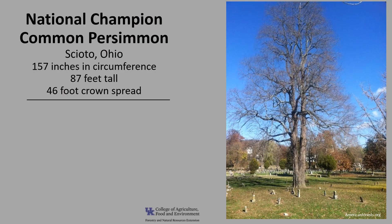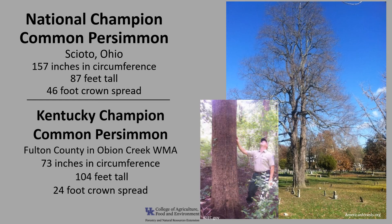The National Champion Common Persimmon is in Scioto, Ohio. It's 157 inches in circumference, 87 feet tall, with a crown spread of 46 feet. The Kentucky Champion is in Fulton County in the Obion Creek Wildlife Management Area — 73 inches in circumference, 104 feet tall, with a 24-foot crown spread. For more information, check out the American Forest Champion Tree Register or the Kentucky Division of Forestry Champion Trees.